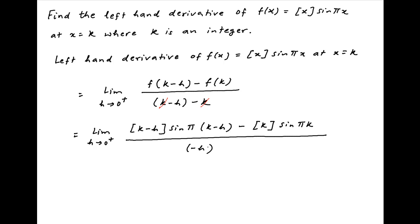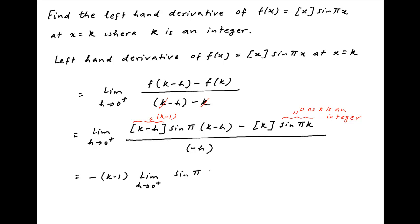Since k is an integer, sin(πk) = 0, because sine of an integral multiple of π equals 0. Also, since h is a small positive quantity, the integral part of k − h equals k − 1. Therefore the limit simplifies to −(k − 1) times the limit as h → 0⁺ of sin(π(k − h)) divided by h.